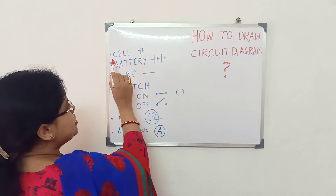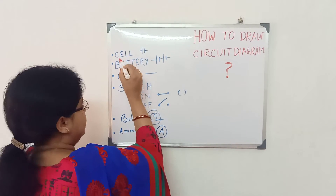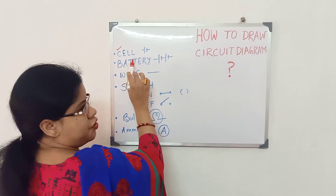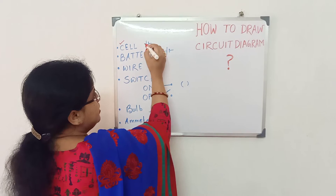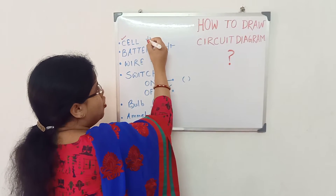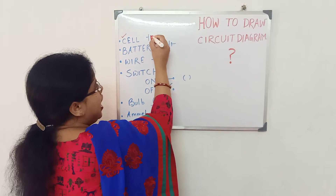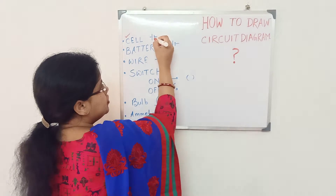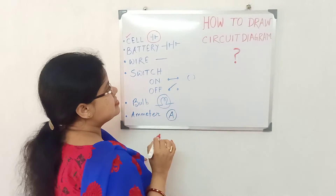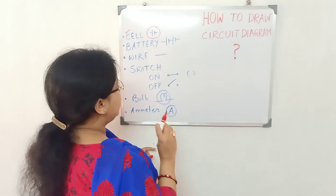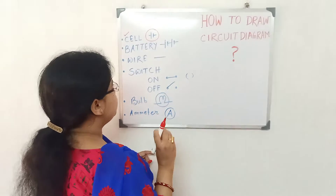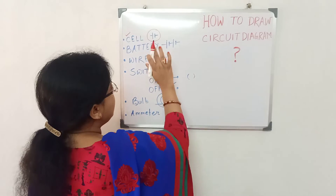Whenever we represent a cell, cell is the source of energy. A single cell is represented by a longer line and a shorter and wider line. This is the diagrammatic representation of a cell.